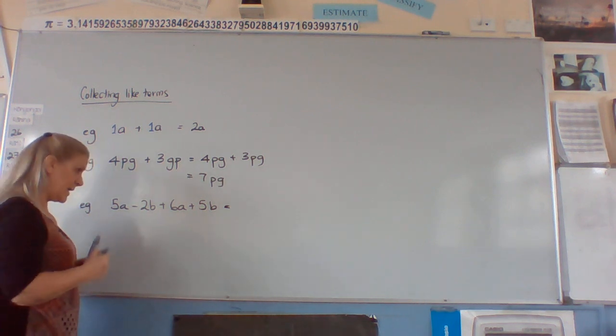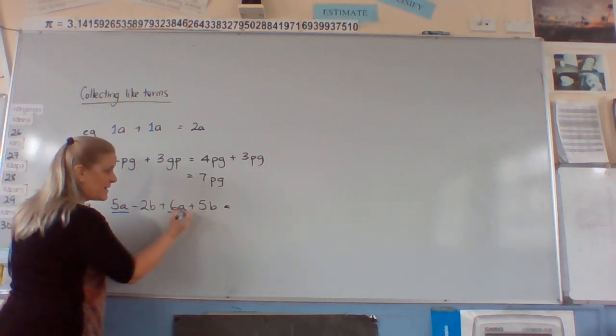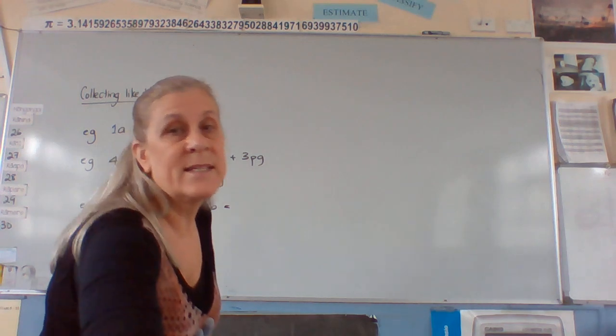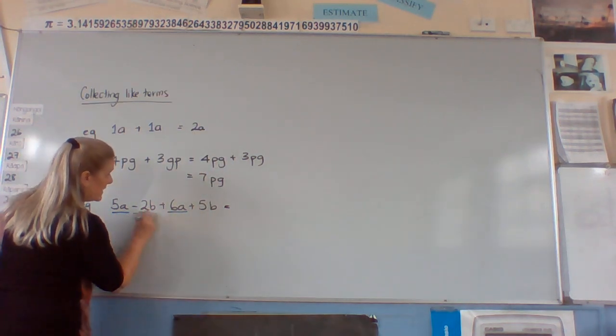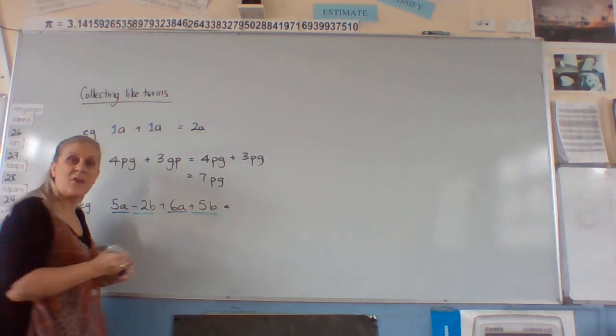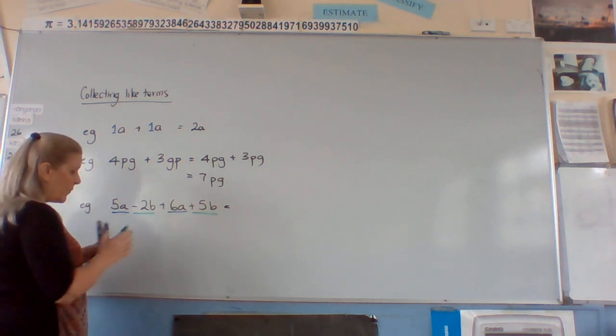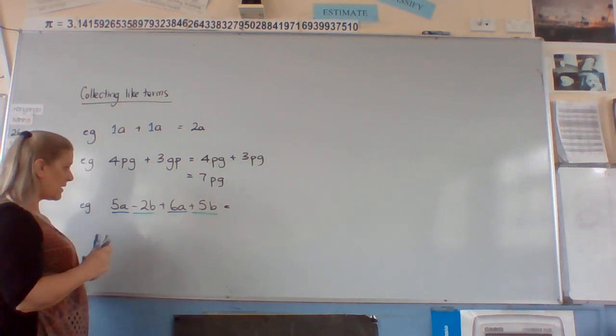So maybe we've got 5A minus 2B plus 6A plus 5B. So the like ones here are 5A and 6A and negative 2B and plus 5B. So if we collect them and put them together in the same place,